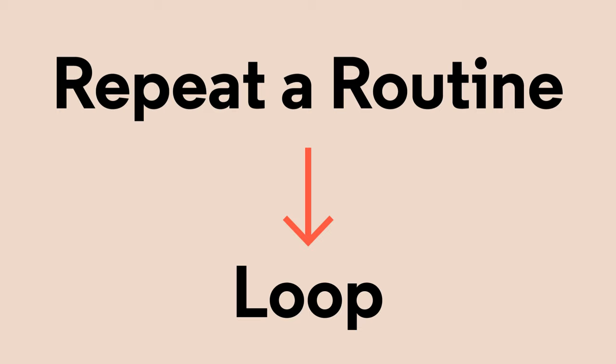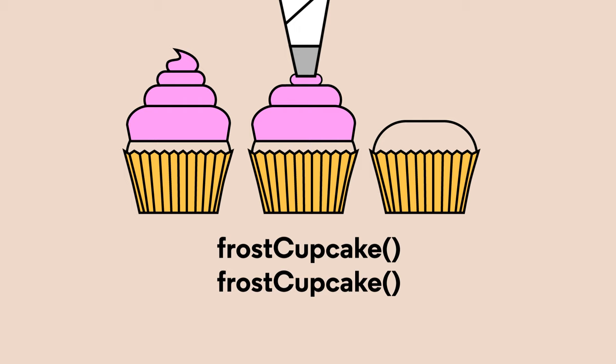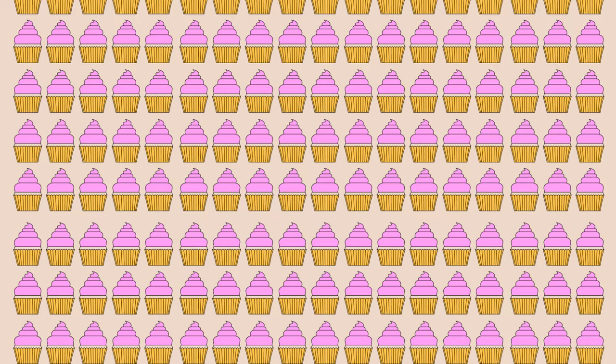The other day, I wrote some instructions for frosting a cupcake and put them in a handy function, frost cupcakes, so that I could reuse them whenever I needed. Say I need to frost three cupcakes in a row — no problem, I can just call my function three times. But what if I needed to frost five, ten, or even a thousand cupcakes?